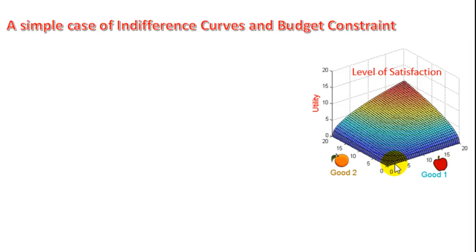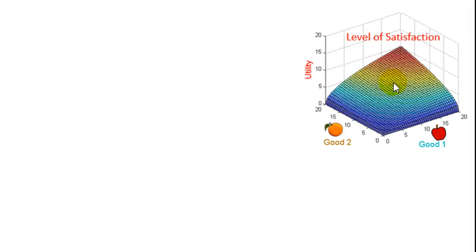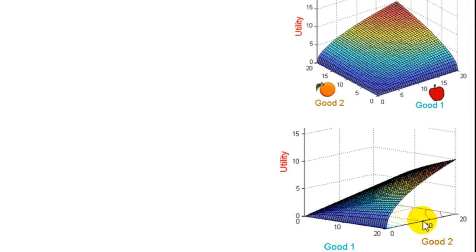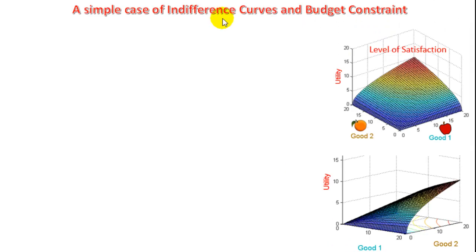If I eat 20 apples and 20 oranges I get this level of satisfaction. Now if we turn this figure, we get this — and these curves that you see here (one, two, three) are the indifference curves, which means that at all of these points the level of satisfaction is the same. In mathematics this is a level curve or contour curve where the value of the function is exactly the same at all those points.